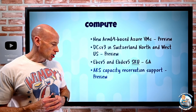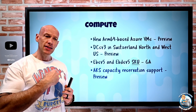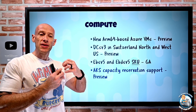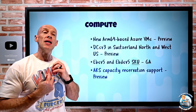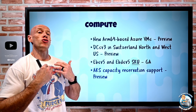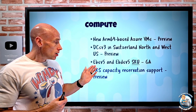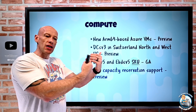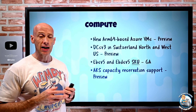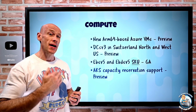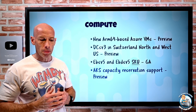AKS capacity reservation support is in preview. Capacity reservations let you start paying for a specific type of compute in a specific region or availability zone via a capacity reservation group. When you're ready to provision your service, you create it against that capacity reservation group and you're guaranteed that capacity will be there. With this, your AKS node pools can be configured to use a capacity reservation group when scaling or provisioning. Just remember — from the time you create the capacity reservation group, you're paying for that whether a VM is using that capacity or not.